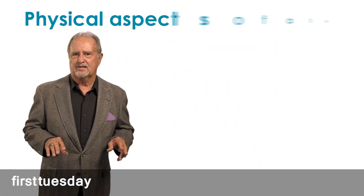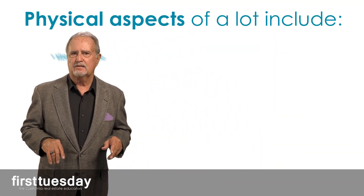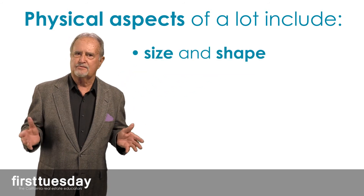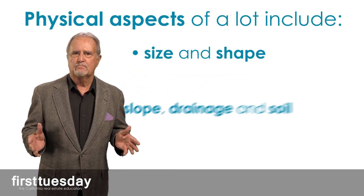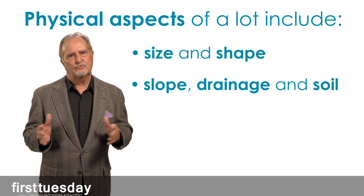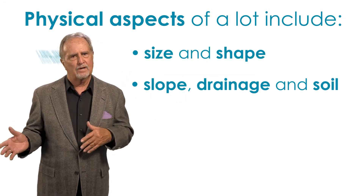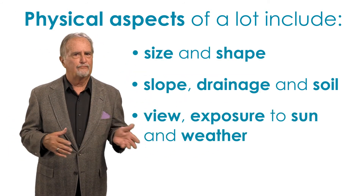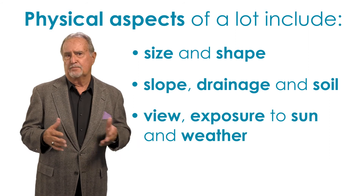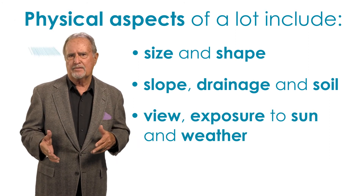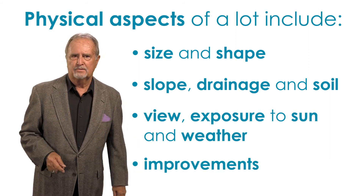The physical aspects of a lot include size and shape, slope, drainage and soil, view, exposure to sun and weather, and improvements.